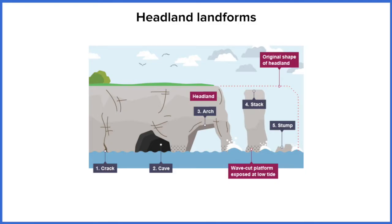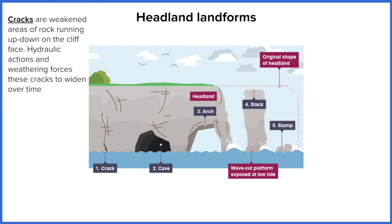So we're going to start off by looking at the headland. There are five features we're going to look at today and it all starts with a crack. Now a crack itself is not a feature, it's a part of the geology of the headland. So we have things called bedding planes and joints.